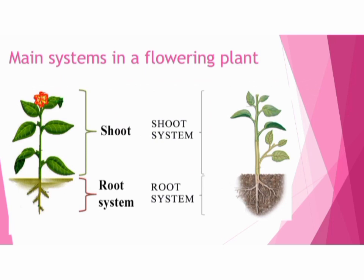I am going to talk about the main systems in a flowering plant. There are two main systems: the first one is the root system, and the second one is the shoot system. The root system grows under the soil and the shoot system grows above the soil.